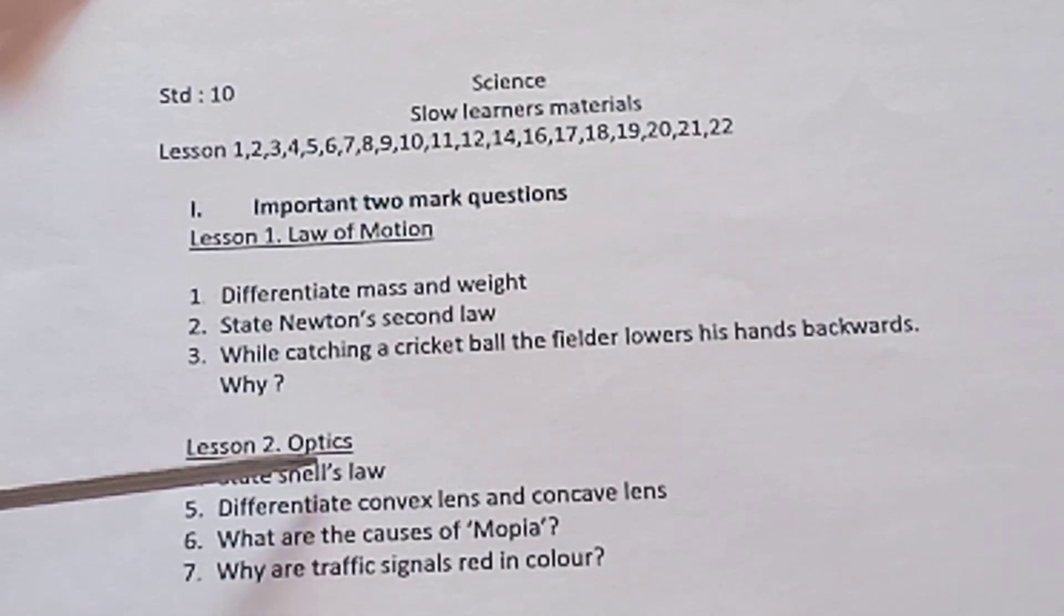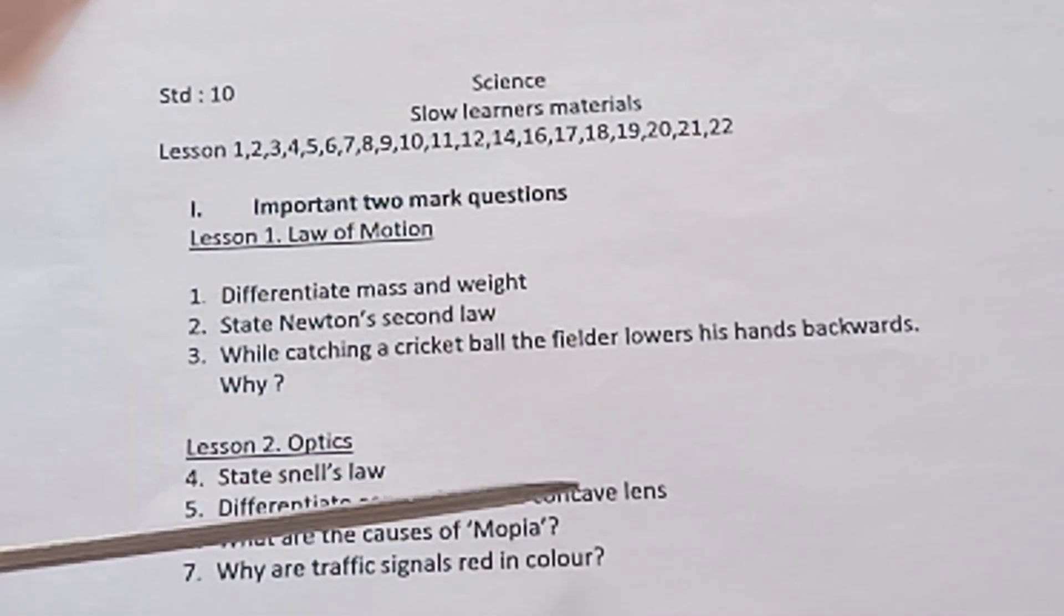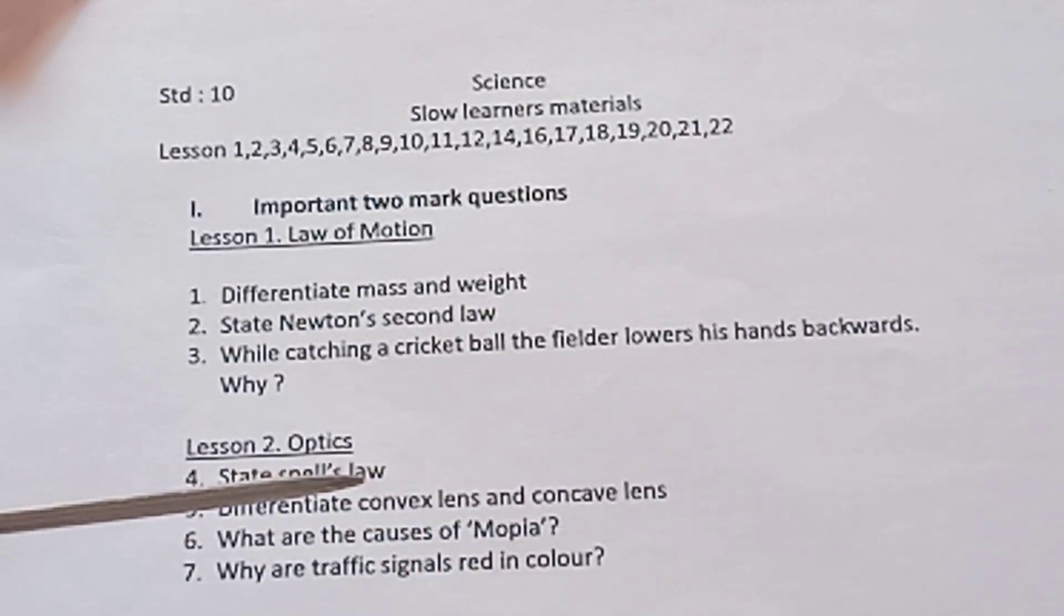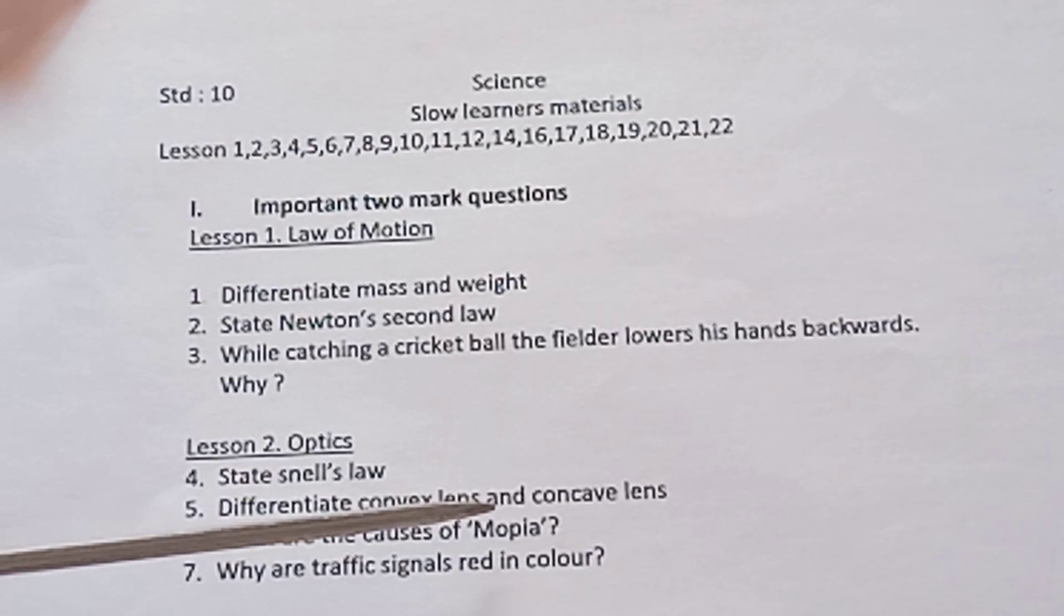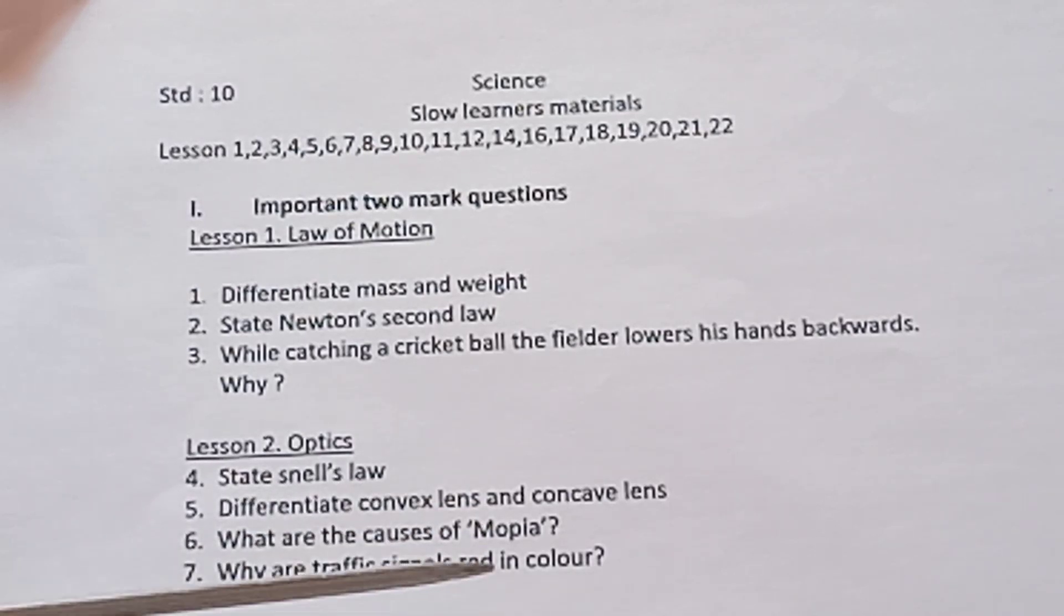Lesson 2 Optics. State Snell's law, how to write the equation, and you have to explain each and every term. Differentiate convex lens and concave lens in tabulation. What are the causes of myopia and how to rectify? Why are traffic signals red in color?